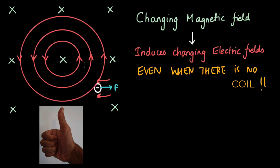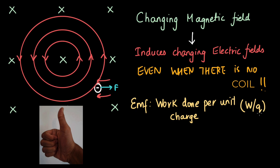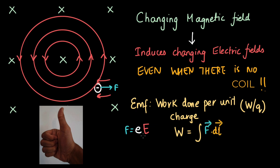Now if this is how induction really works, we need to rewrite Faraday's law and include this induced electric field. We know that EMF is work done per unit charge, that is W divided by Q. And if there is an electron moving through the loop, there will be some work done on it — the force that does the work is provided by the electric field, and that is given by the charge on the electron, small e, multiplied by the magnitude of the induced electric field. We can write work as the integral of F dot dL, where F is the charge on the electron multiplied by the magnitude of the induced electric field.